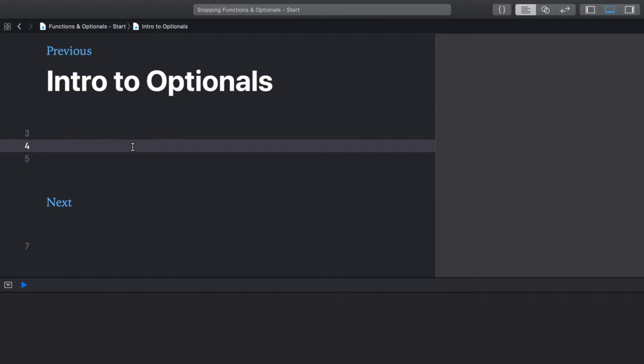Now that you've got an idea of what Optionals are about, let's see what they look like in code. To make our first Optional, let's use that cat name example. Create a variable called catName and make the type a string.